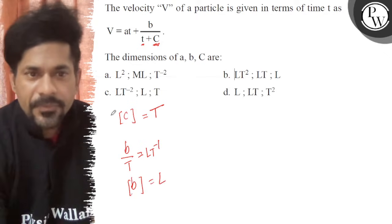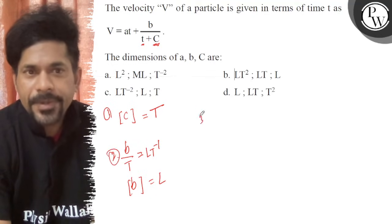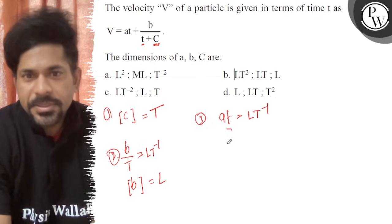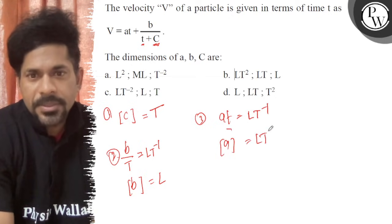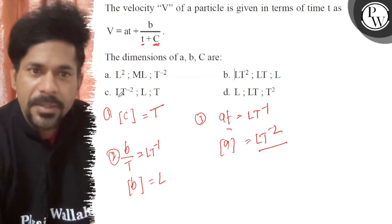Now the third one we have to find is a. So a times t equals velocity, meter per second, which is LT^-1. This is time, so a has dimension LT^-2. If you see the options, a is LT^-2.